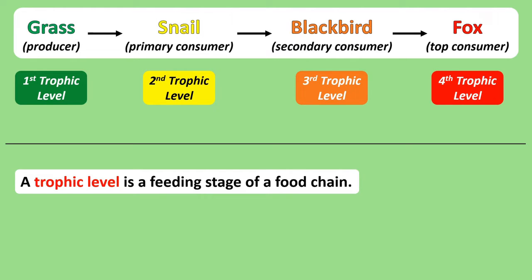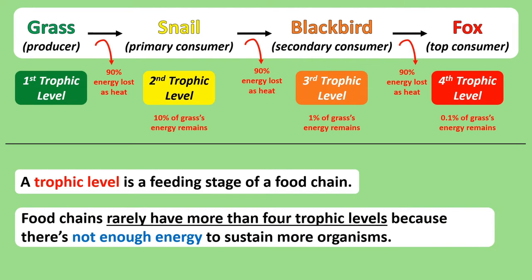An important point to note is that food chains are rarely longer than four organisms. The reason for this is all to do with energy. Between each trophic level, there's a 90% loss of energy. When the snail eats the grass, only 10% of the energy that was in the grass actually makes it into the snail — the remaining 90% is lost as heat to the environment. Again, when the blackbird eats the snail, only 10% of the energy that was in the snail makes it to the blackbird, and when the fox eats the blackbird, only 10% of the energy in the blackbird makes it to the fox. This huge reduction in available energy limits the amount of organisms that can exist in a food chain. Only 0.1% of the energy that was in the grass makes it through the food chain to the fox, so there wouldn't be enough energy to sustain another organism after the fox.